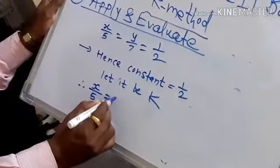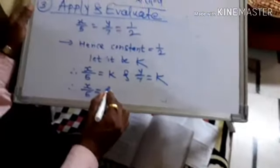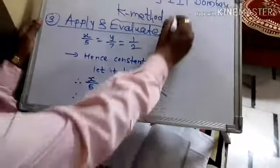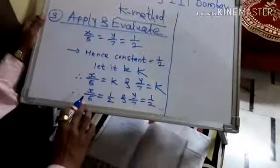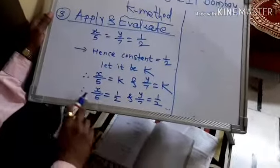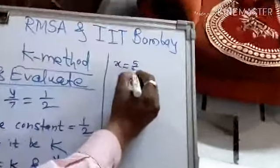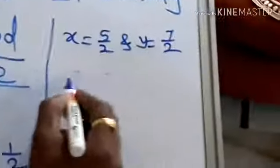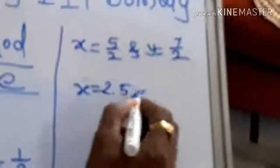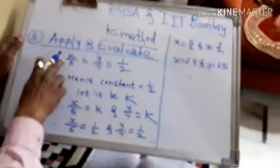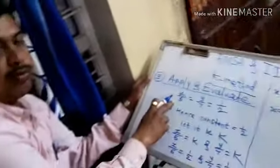x by 5 is equal to k and y by 7 is equal to k. x by 5 is equal to 1 upon 2 and y by 7 is equal to 1 upon 2. So making two separate equations, we can find out the value of x. x is equal to 5 by 2 and y is equal to 7 by 2. Therefore, x is equal to 2.5 and y is equal to 3.5. So with the help of k method, we can find the missing terms x and y in both the ratios.